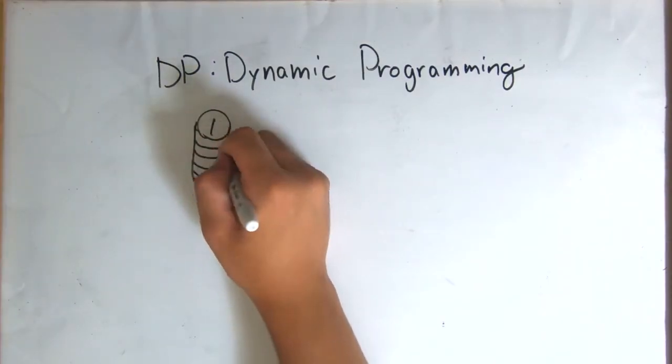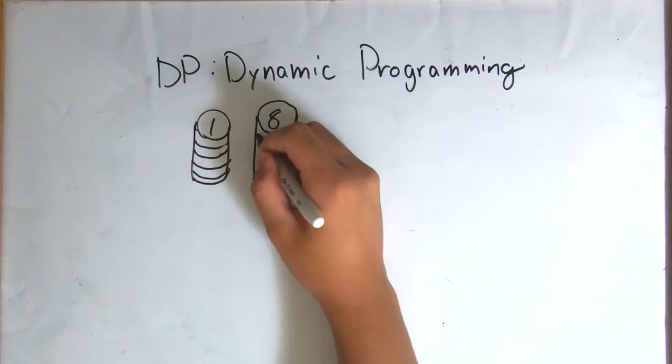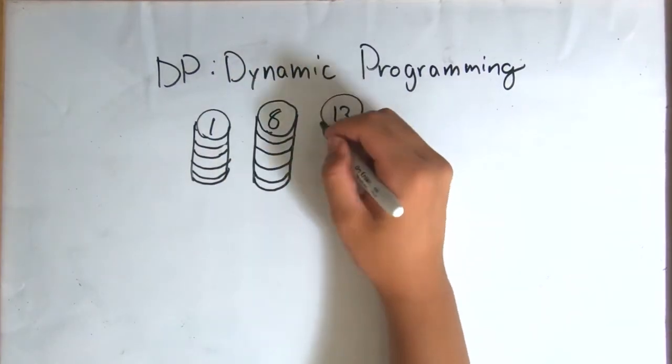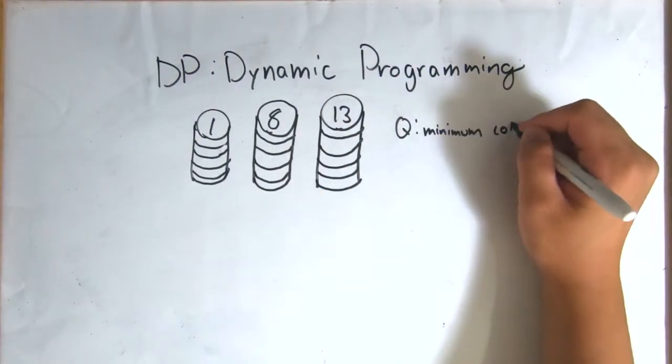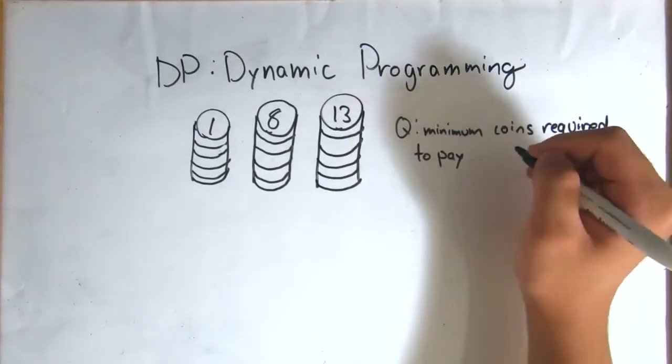Another example is finding the minimum number of coins required to pay a certain amount. Say in some arbitrary country, you have access to 1, 8, and 13 dollar coins.